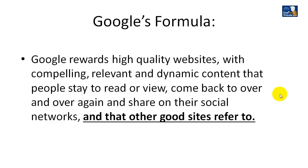Hi everybody, Alex Shaker here, and this is the sixth video in the Game Website video tutorial series. I'm going to continue where I left off, with Google's formula. In the first five videos I covered a little bit about Google, what high quality websites are, what does it mean when I say compelling, relevant, and dynamic content, how does Google determine whether people stay or read or view and come back over and over again, and how does Google determine whether people are sharing the content on their social networks.